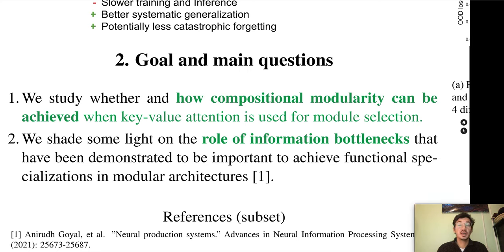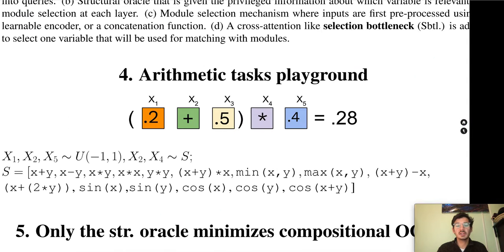We also study how other information bottlenecks, such as the functional bottleneck, can impact training of modular architectures in this setting. We study the domain of compositional arithmetic tasks where the underlying modules must learn to perform operations such as addition, subtraction, or multiplication. We assume that input data is presented in the form of separate variables where each variable encodes either the input digit or the operation.